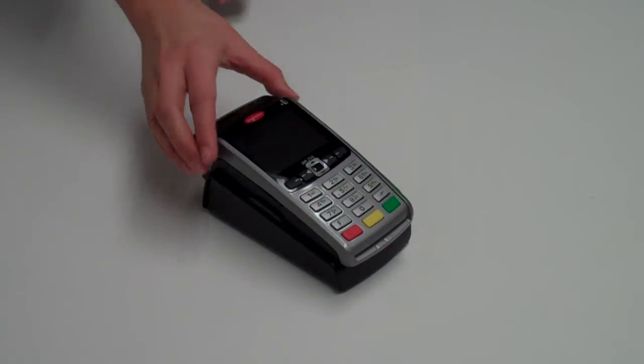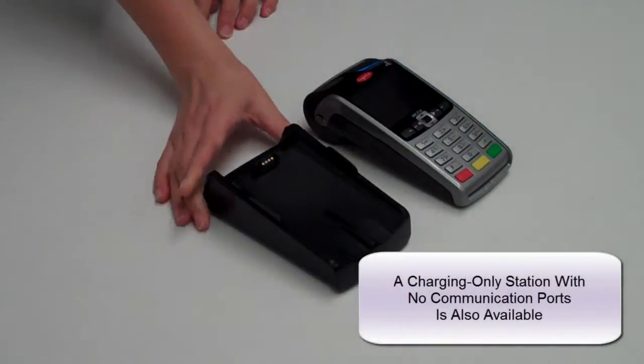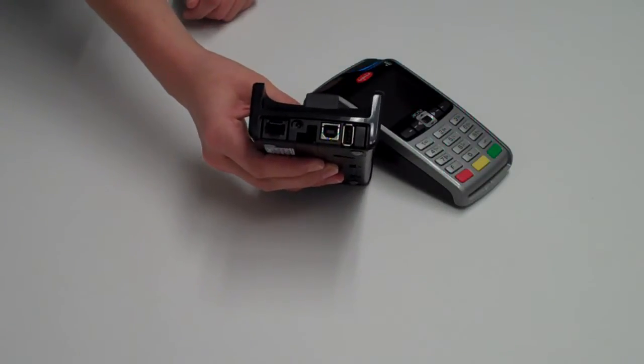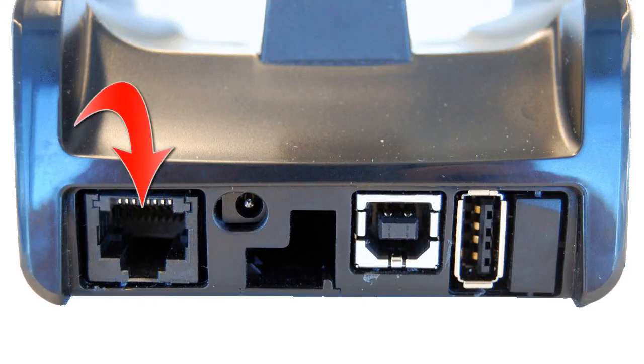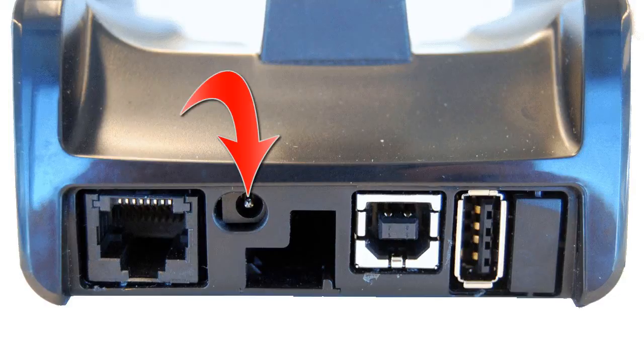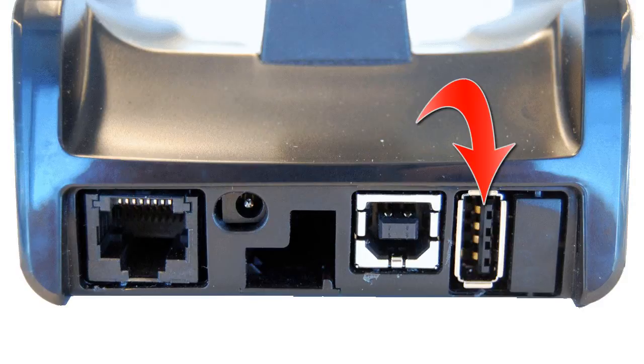The docking station serves two purposes: one to charge the device, two to handle any wire communication. It's equipped with an ethernet port, a port to plug in the power supply, a USB B port, and a standard USB port as well.